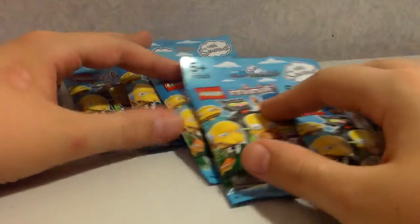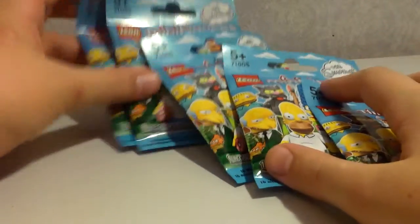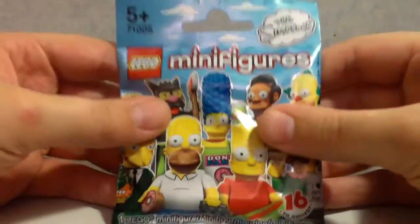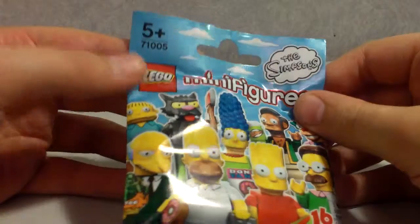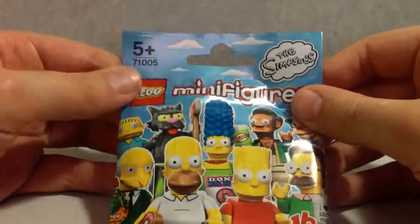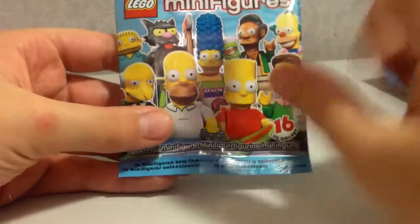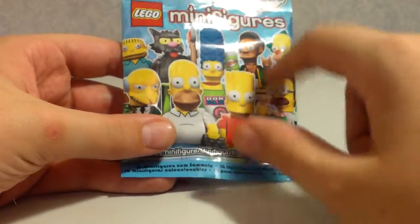We'll have to see what's in these. I hope they're all different, but we'll have to see. Let's get started with the first one. This is what the packets look like: 7100-5, The Simpsons.